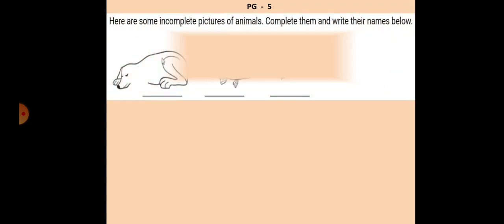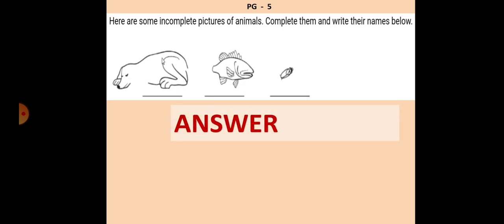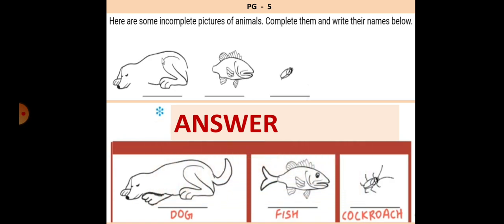We will go to the next question, that is in page number five. Here are some incomplete pictures of animals. Complete them and write their names below. This is a very simple one. The answer is the first one is the dog, the second one is the fish and the last one is the cockroach. Fine.